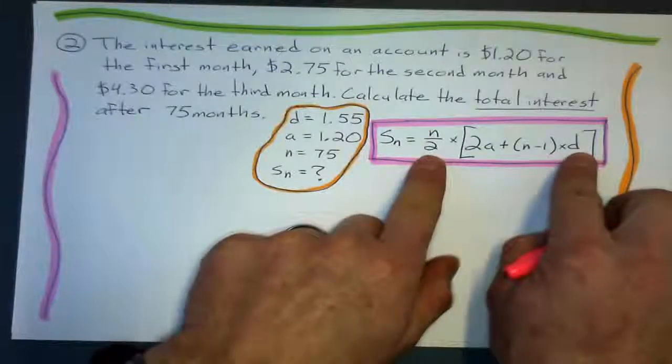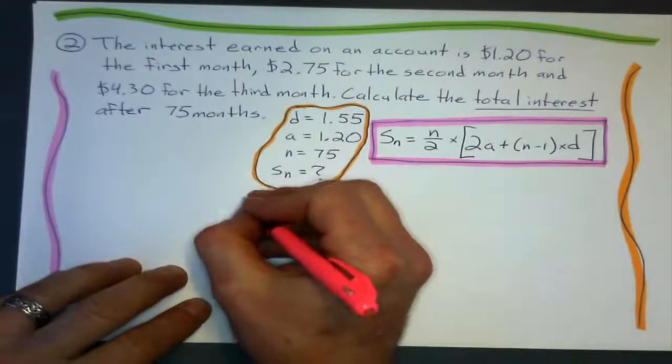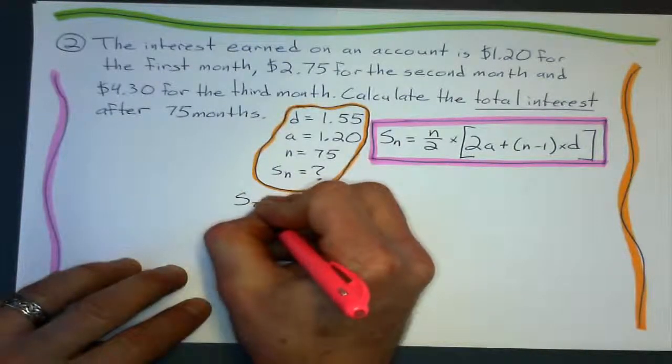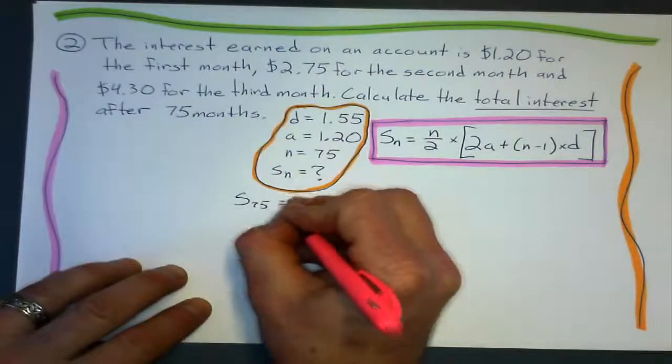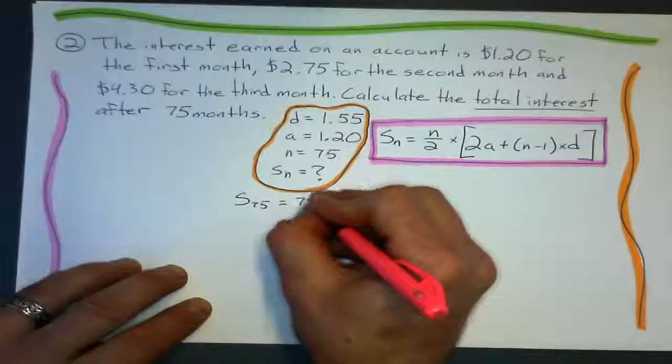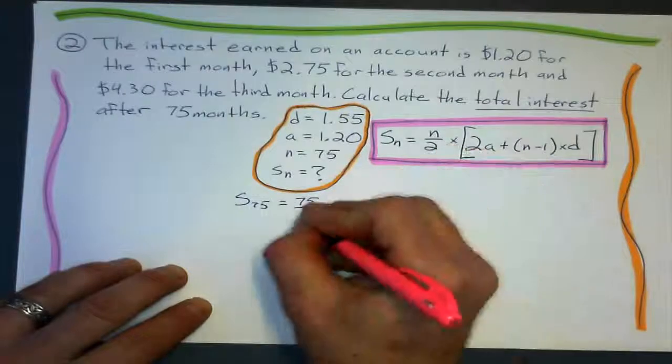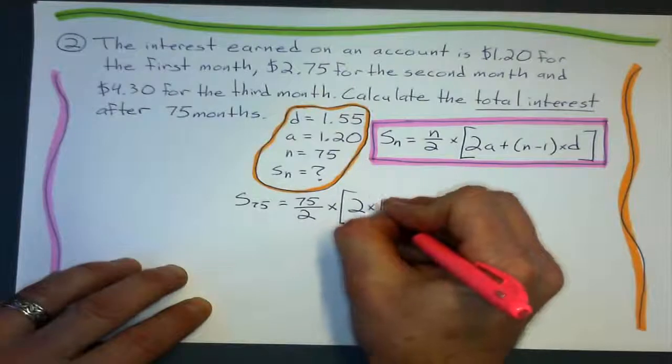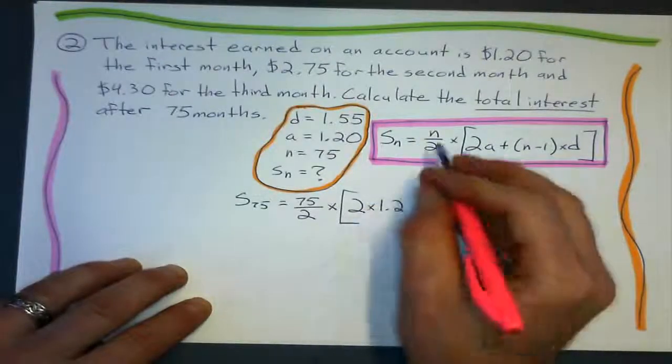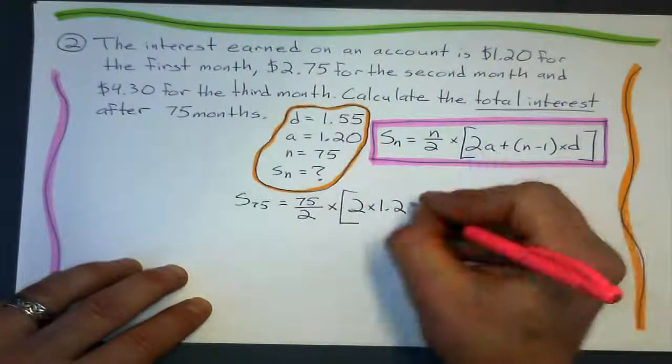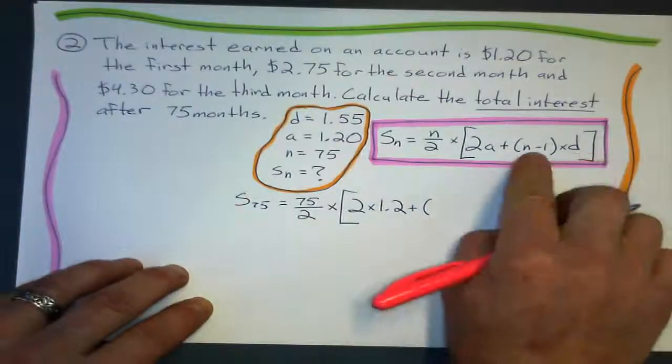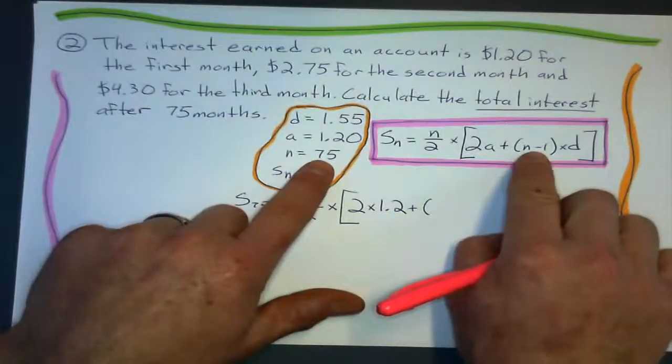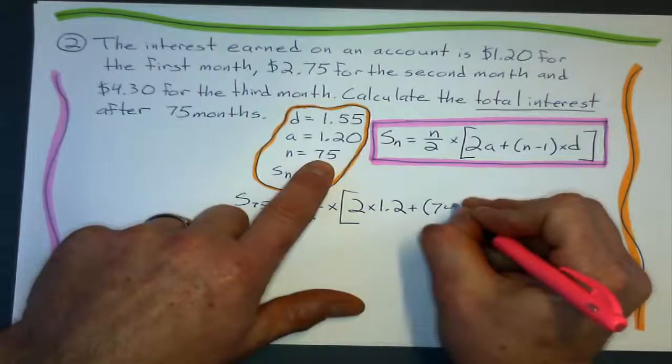And I want to know the sum of the first 75 terms is going to be 75 divided by 2 times 2 times the first term. I'll just write it as 1.2. I don't need that 0 there, do I? No. Plus N minus 1. Can I just say 74? I'm going to say 74 times my common difference of 155.